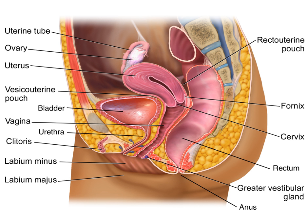Gametogenesis is the formation of gametes, or reproductive cells. Spermatogenesis is the production of sperm cells in the testis. In mature testes, primordial germ cells divide mitotically to form the spermatogonia, which in turn generate spermatocytes by mitosis. Then each spermatocyte gives rise to four spermatids through meiosis. Spermatids are now haploid and undergo differentiation into sperm cells. Later in reproduction, the sperm will fuse with a female oocyte to form the zygote.